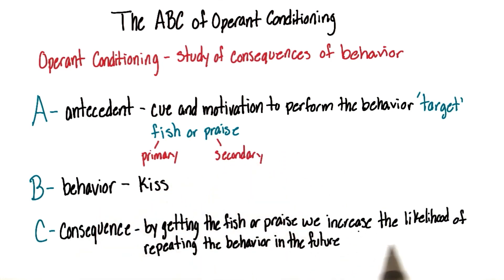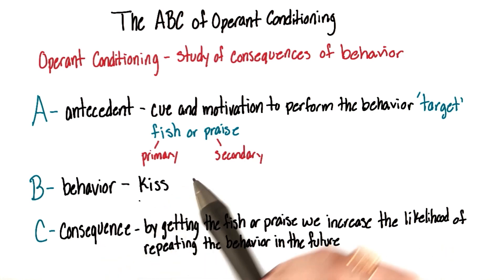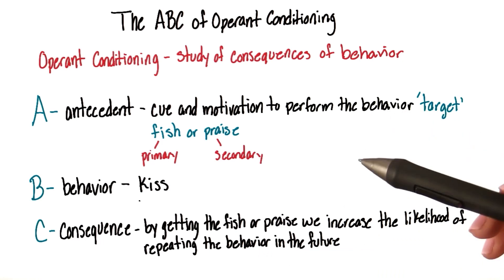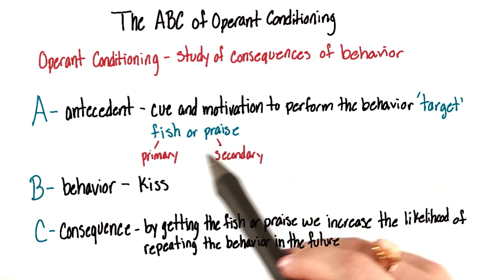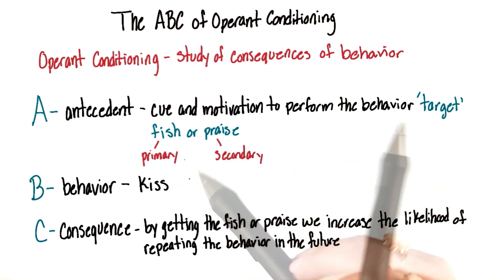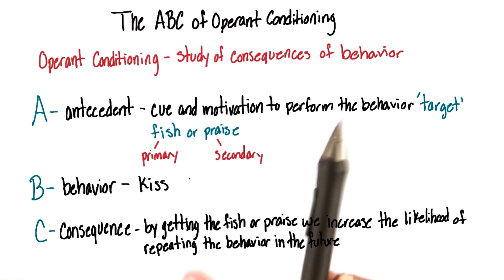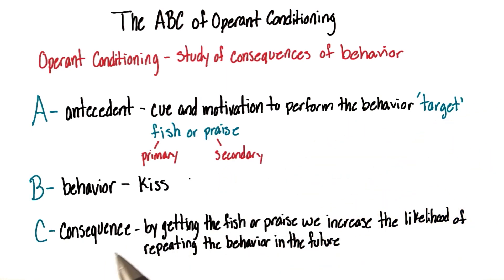By getting the fish or the praise, we increase the likelihood of repeating the behavior in the future. In this case with the kiss, the consequence was something good — Saki received praise and a fish for giving the kiss. However, if the consequence for the kiss was something bad, it would decrease the likelihood of the behavior.